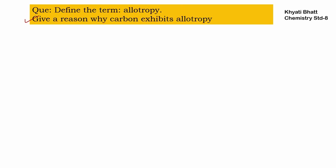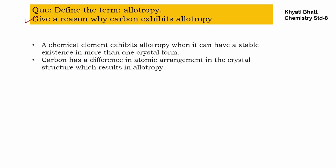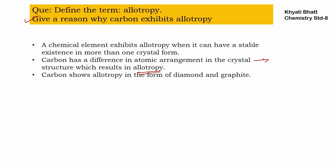Carbon exhibits allotropy because a chemical element exhibits allotropy when it can have stable existence in more than one crystal form. Carbon has the capability to exhibit allotropy because it has more than one crystal form — diamond and graphite. Carbon has a difference in atomic arrangement in crystal structure which results in allotropy. Diamond and graphite are structurally different but their constituent element is the same, carbon.